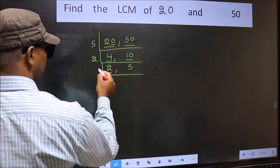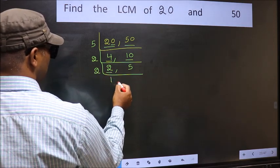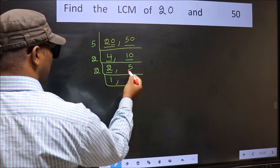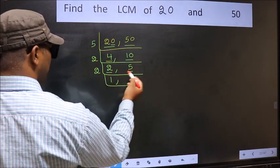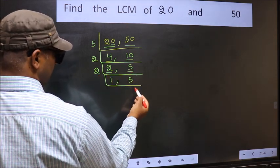Now here we have 2. 2 is a prime number. So 2, 1 is 2. The other number 5 not divisible by 2. So we write it down as it is.